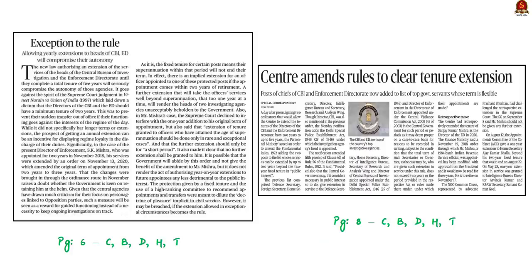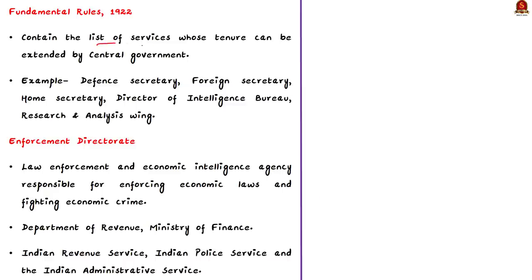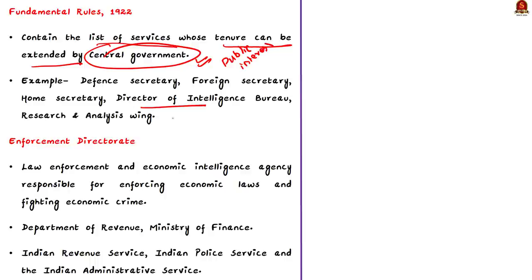Look at these two articles. The article speaks about the center's retrospective tenure extension to Mr. Mishra, the Director of the Enforcement Directorate. These two news articles discuss ordinances that would allow the center to extend the tenure of directors of CBI and the Enforcement Directorate, and the implications of such action. The article also discusses an order by the personal ministry to amend the Fundamental Rules 1922, which contain the list of services whose tenure can be extended by the central government in the context of public interest. The rules are being amended to add the CBI Director and Director of Enforcement Directorate to this list.